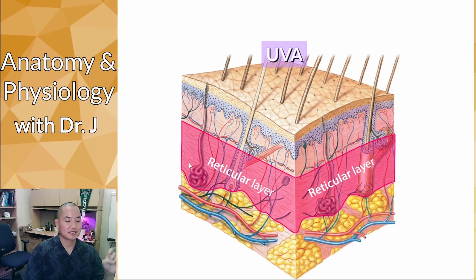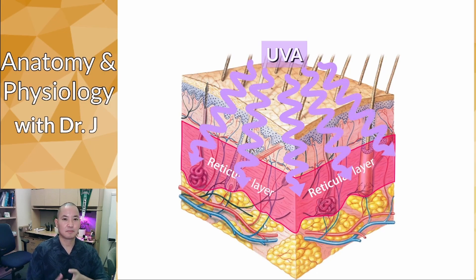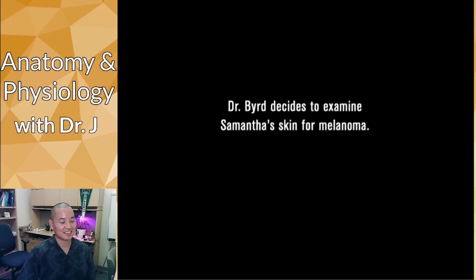UVB radiation stops at the epidermis and the border of the epidermis and dermis. But UVA can actually penetrate deeper into your dermis, entering the reticular layer where you have all these proteins — collagen, elastin, and other reticular fibers. If someone goes to the beach too often or uses tanning beds, they're constantly bombarding that layer with UVA radiation.